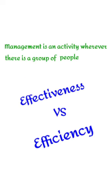Management is simply an art of getting things done through others. An organization is a group of people, and management can be seen wherever there is a group of people. Management is an activity performed by managers to manage that group. There are two important things aimed at by management: effectiveness and efficiency. Effectiveness simply means completing a given task, while efficiency means completing the task correctly and with minimum cost.